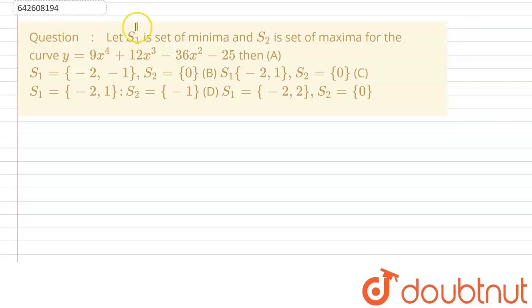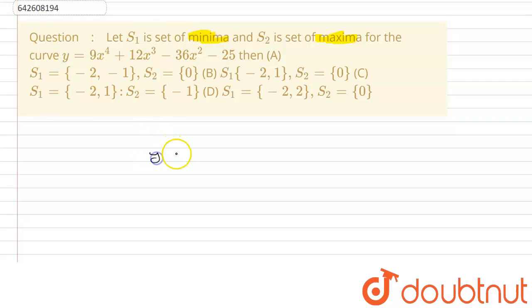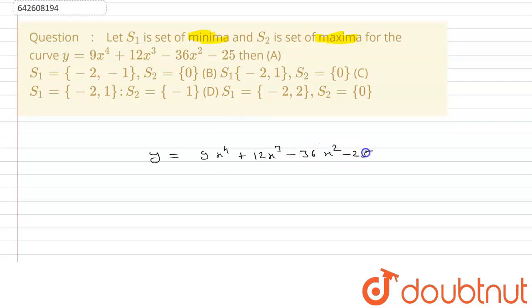Hello everyone. The question is: let S1 be the set of minima and S2 be the set of maxima for the curve y = 9x⁴ + 12x³ - 36x² - 25. Then which option is correct?